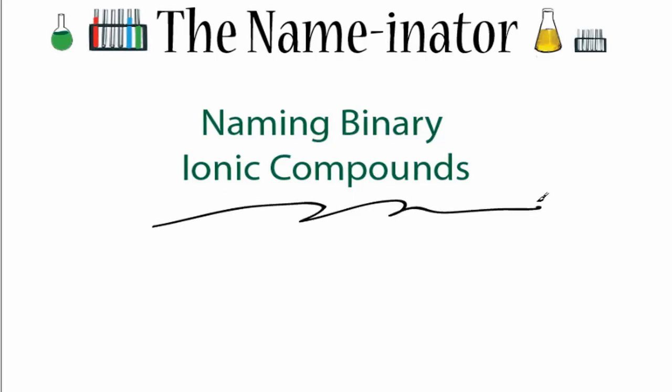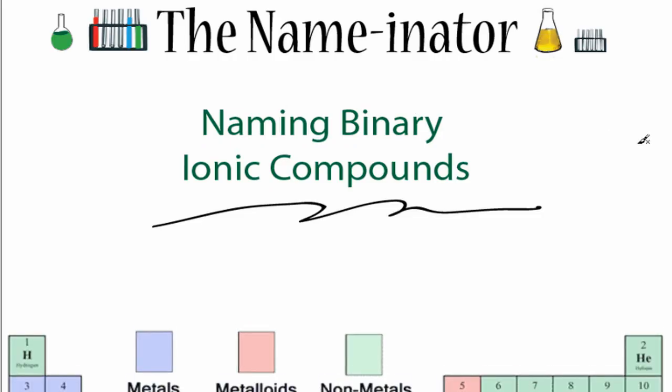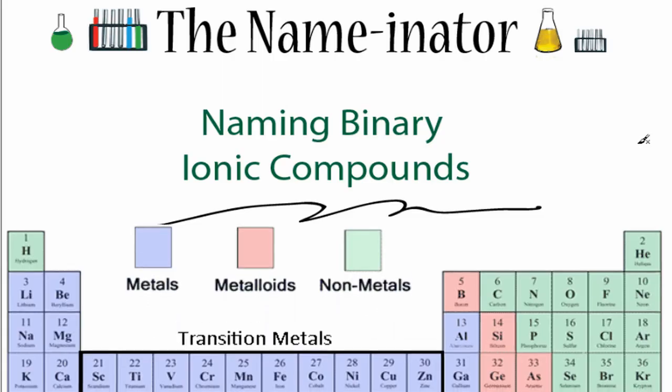Naming binary ionic compounds is actually one of the easier naming tasks. The key is knowing when you have a binary ionic compound, and to do that, we're going to look at the periodic table and find both of the elements.